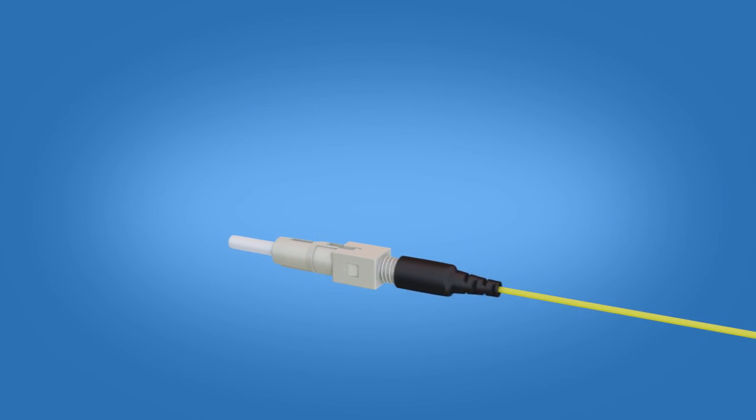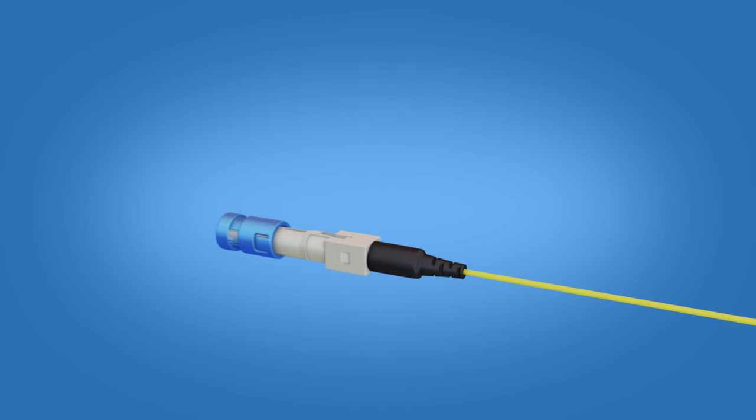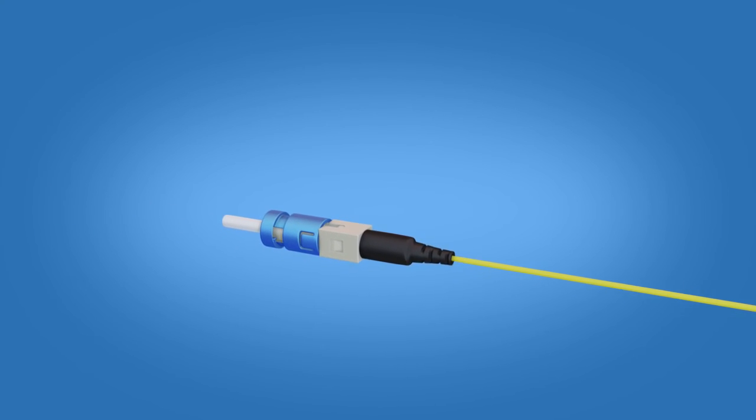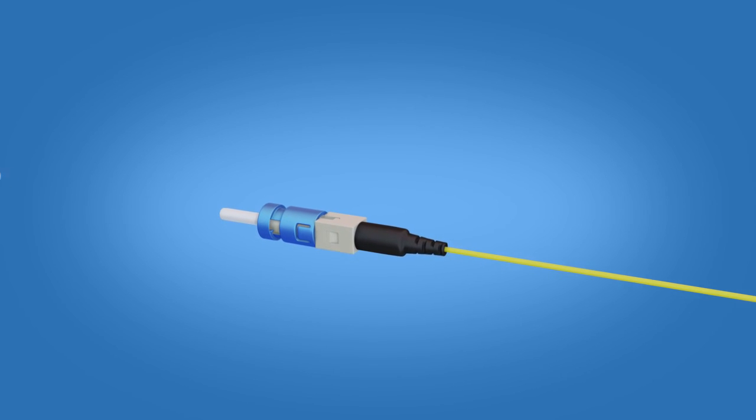Push the boot onto the connector body. Apply the connector housing to the connector body. You will not be able to re-engage the wedge clip after the housing is applied.